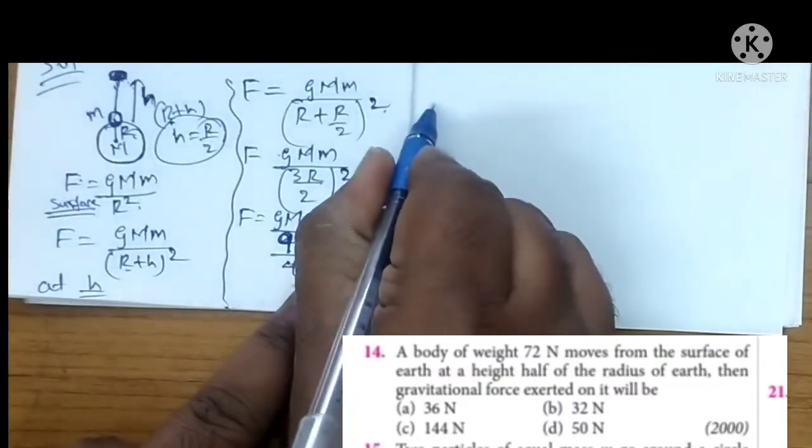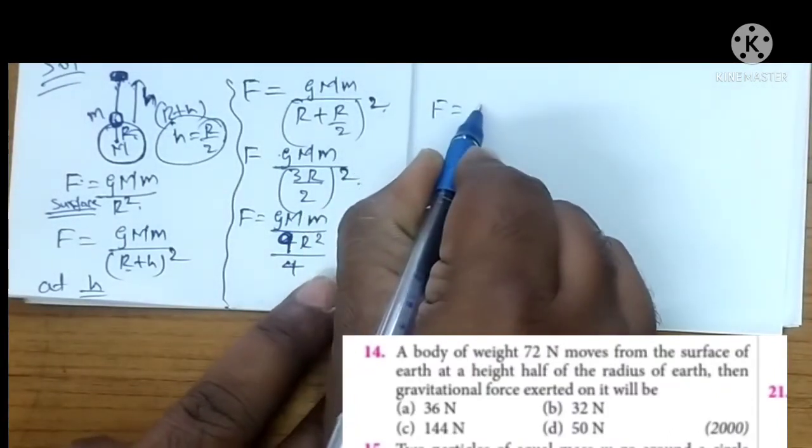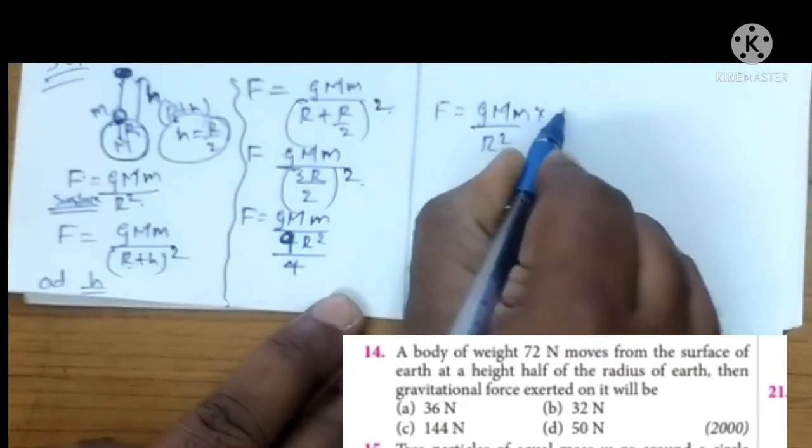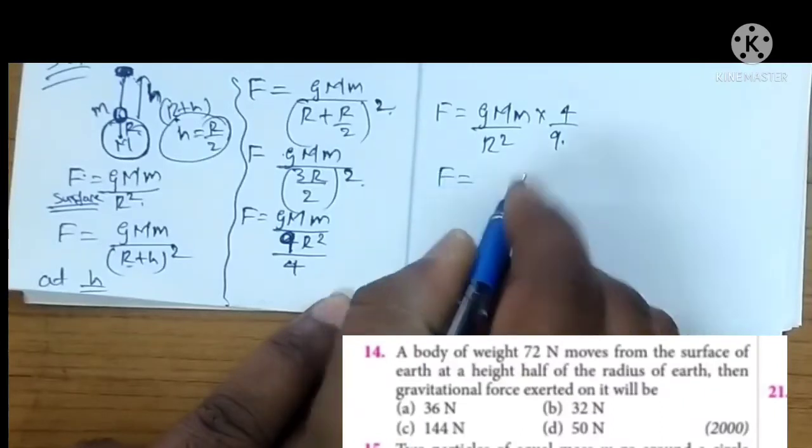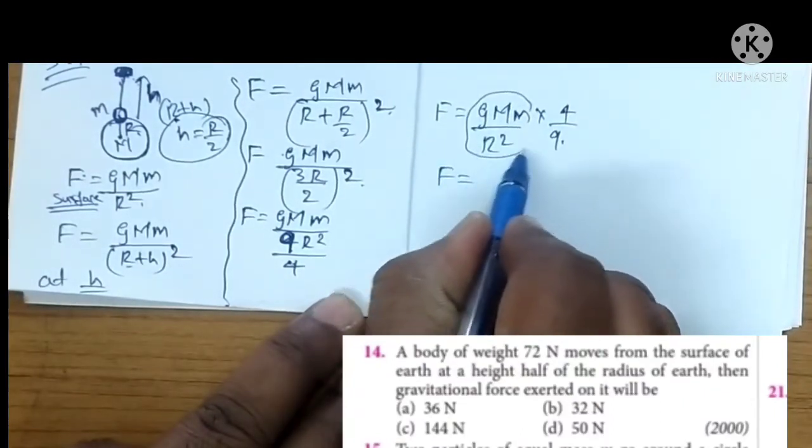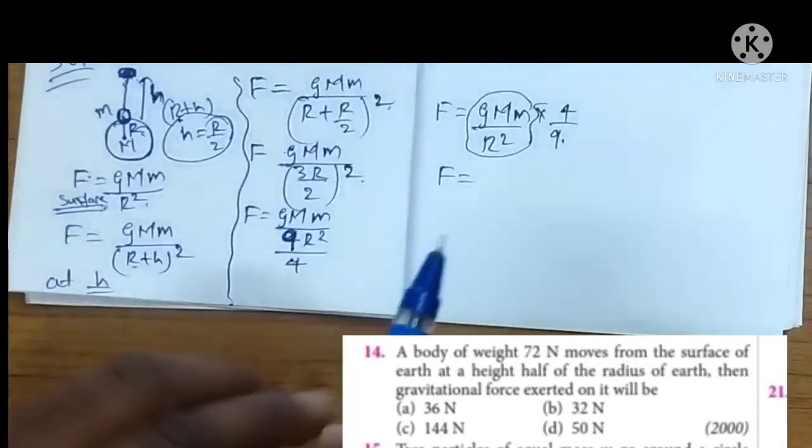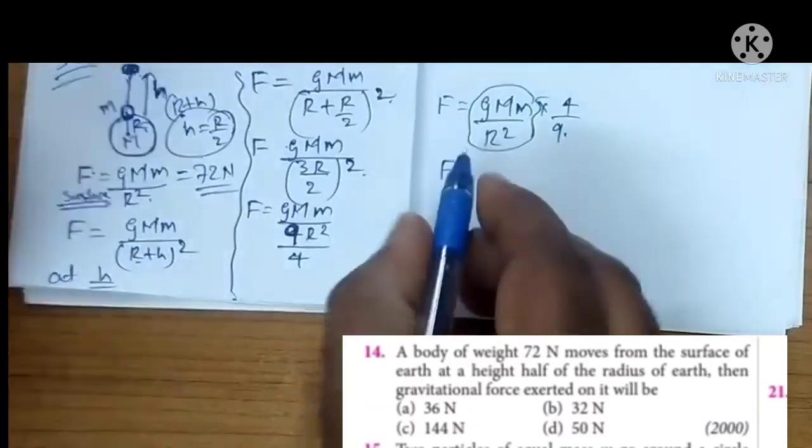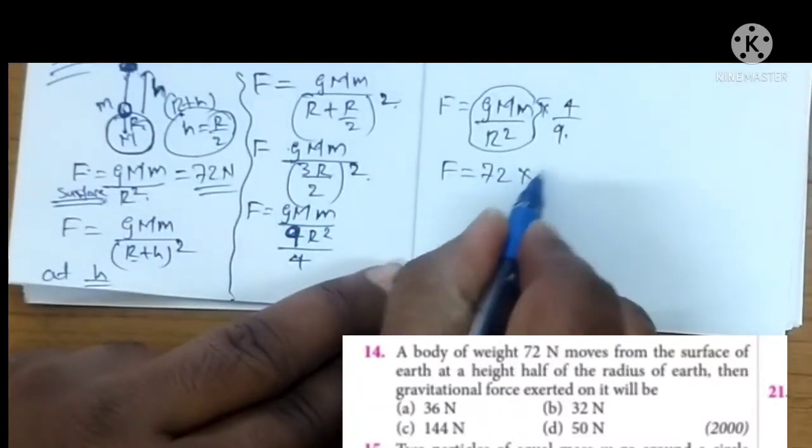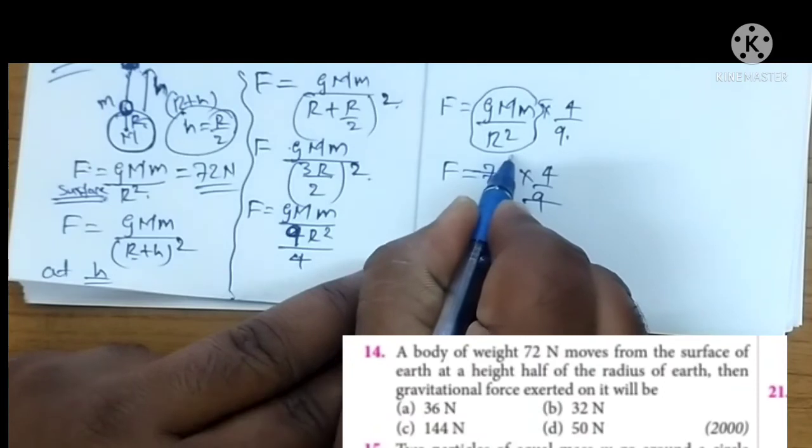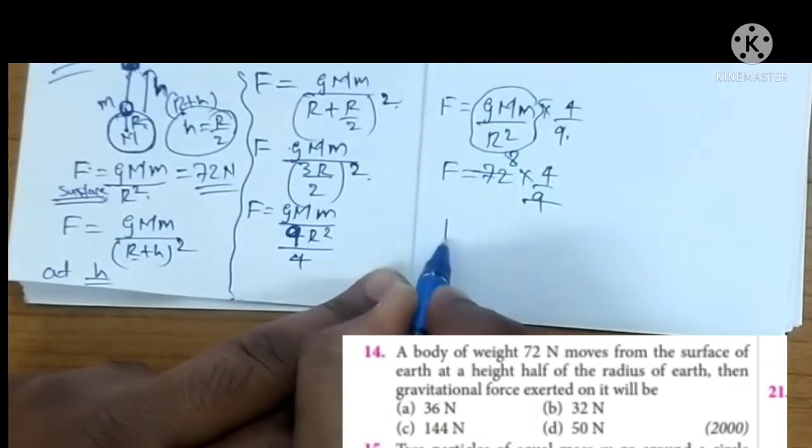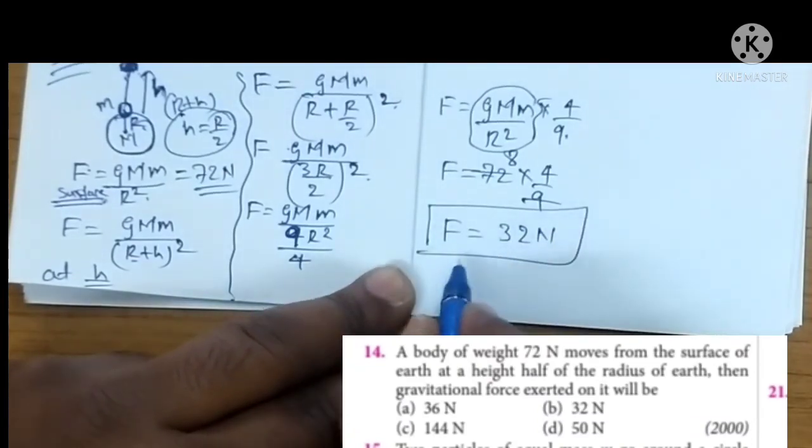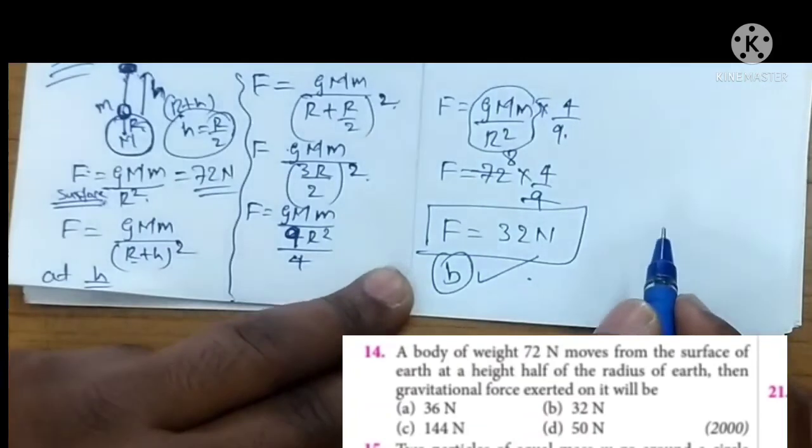So F is equal to G M m upon r square into 4 upon 9 होता है. So इधर देखो. G M m upon r square का value दिया है. Surface का value दिया है. कितना दिया है? 72 newton दिया है. So I am going to substitute 72, 4 upon 9. So 9, 1, 9, 8, so 8 into 4, 32 newton. Based on this we can say 32 newton, option B would be the right answer.